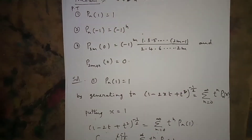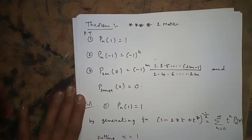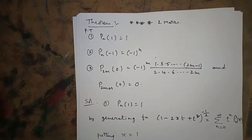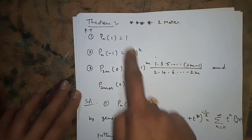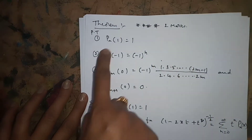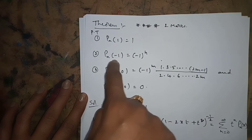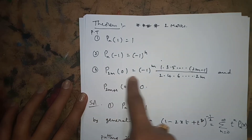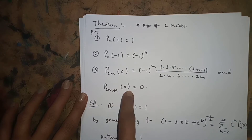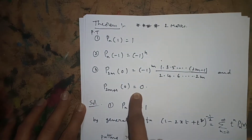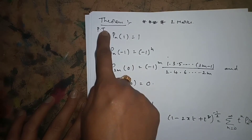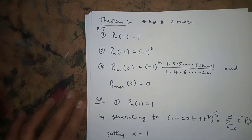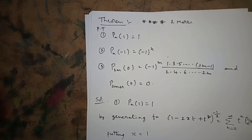Now we have an important theorem, which is important for 2-mark questions. We need to prove: first, Pn of 1 is equal to 1; second, Pn of minus 1 is equal to minus 1 to the power of n; third, P2m of 0 equals a specific expression; and fourth, P2m plus 1 of 0 is equal to 0. We will prove all three points one by one.